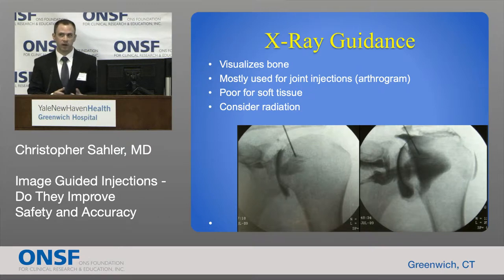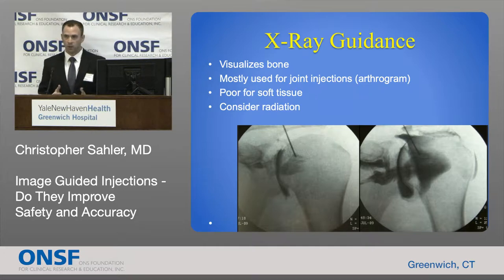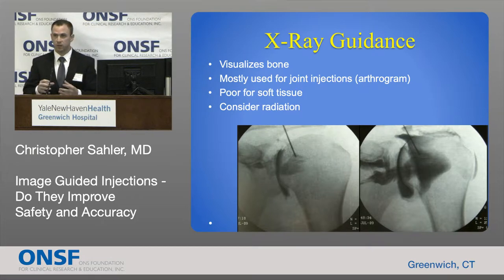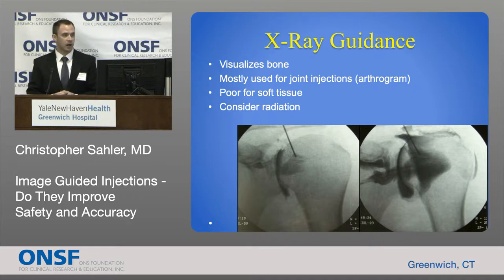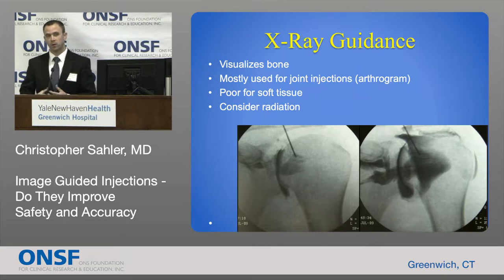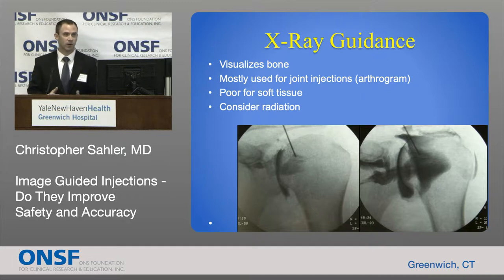Briefly talking about x-ray guidance using the fluoroscope: x-rays are visualizing bony anatomy, so we often use these for joint injections. There would be an arthrogram — we're able to visualize the needle, the bony structures, and then we use a contrast material, a dye, to visualize the flow of the medication and make sure it is truly intra-articular. X-rays are not visualizing soft tissue, so these aren't really preferred for many soft tissue injections.